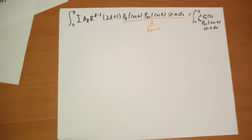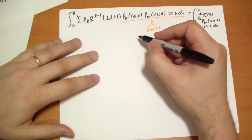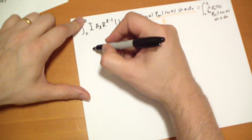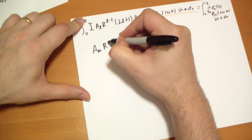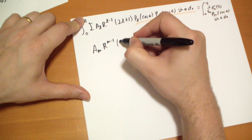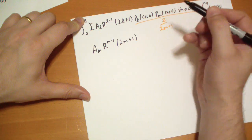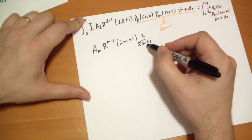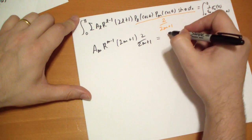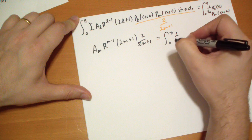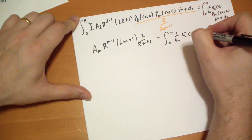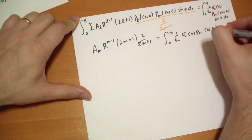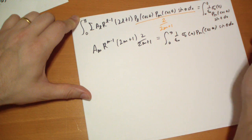We can pull out this part of the integral, but we note that only when L equals M do we get a result. In fact, when L equals M, this whole junk is equal to 2/(2M+1). So the integral is equal to 2/(2M+1). And now only the M terms survive. So we have A_M*R^(M-1)*2M+1 times 2/(2M+1) is equal to this integral.